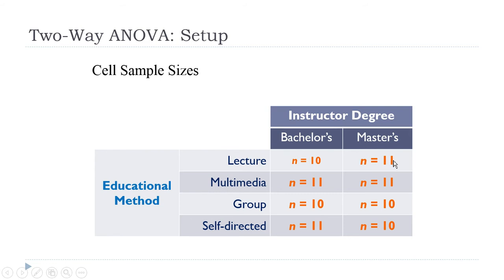Some people talk about ANOVAs as being balanced when they have exactly the same number of observations in each cell. That can be damnably hard to do — what if one person drops out of the study? But there are some advantages to that. You can do some extra special things with your analysis and really trust some aspects of it if you have a balanced ANOVA, but it's actually not that common because it's really hard to force that to happen.